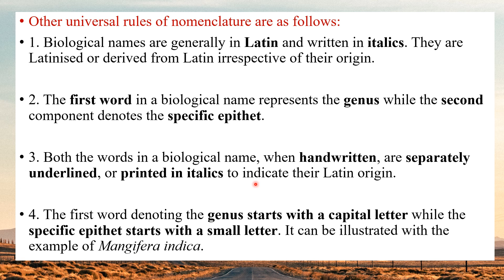The universal rules of nomenclature are the most important topic of this chapter. Most of the time you'll be given four options, one of which will be changed, making it one MCQ. Biological names are generally in Latin, written in italics; they are latinized or derived from Latin irrespective of their origin. The first word in a biological name denotes the genus, and the second word is the specific epithet. Both words must be separately underlined when written by hand.